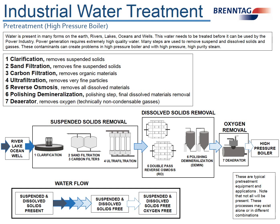Industrial Water Treatment: Guide to the Water Market — Pre-Treatment for High-Pressure Boilers. We distinguish high-pressure pre-treatment and high-pressure boilers by boilers that generate steam, typically used in turbines to generate electricity.